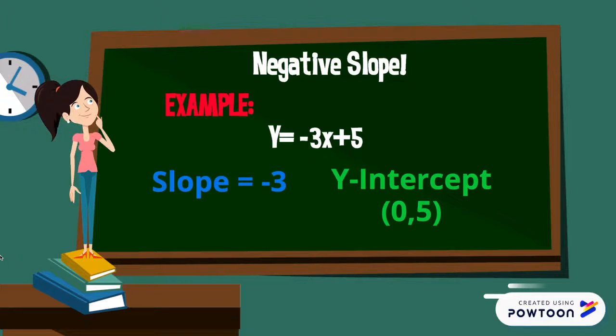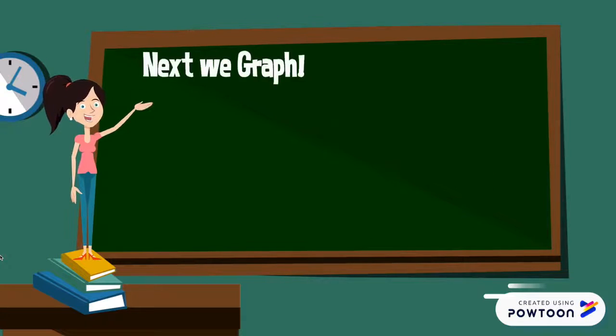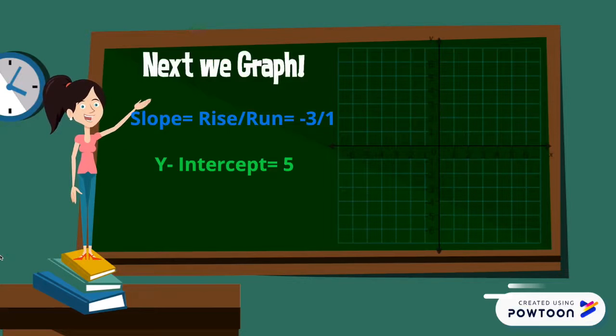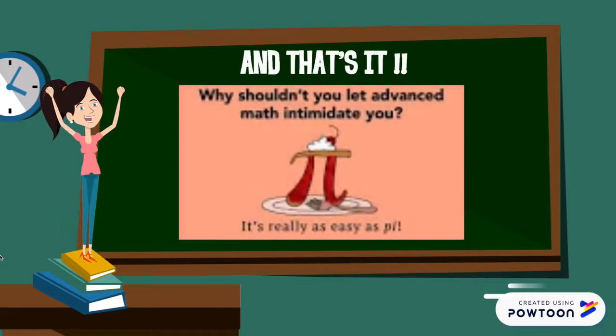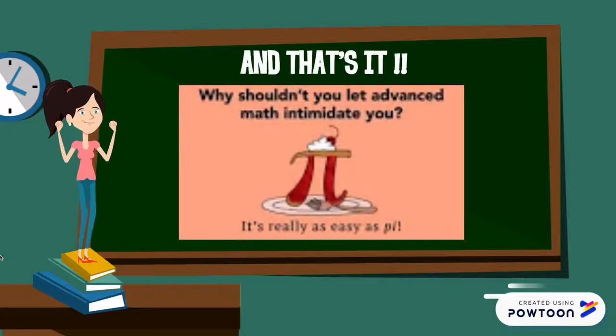After this, we are going to graph our linear equation. And since our slope is negative, we are going to go down 3 instead of going up 3, because again, if it's negative we are going to be decreasing. So then we graph our point, which is 5 as our y-intercept, and then we go down 3 and to the right 1, and that gives us our slope. We continue doing that until we get several functions.